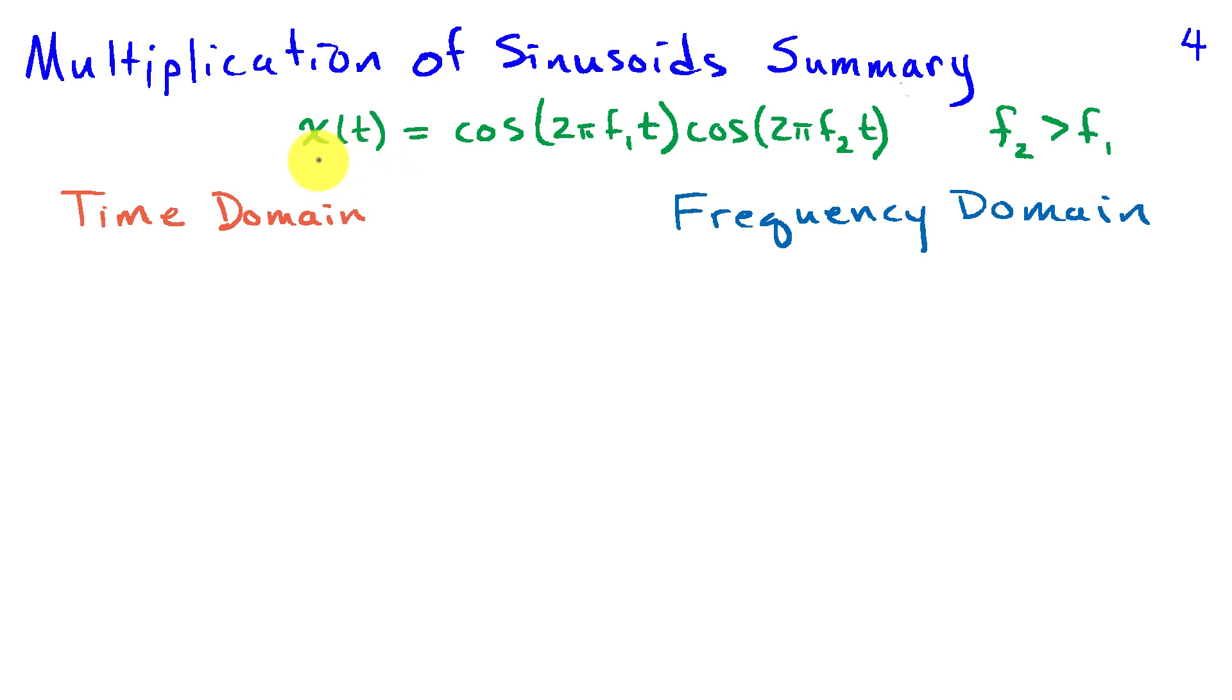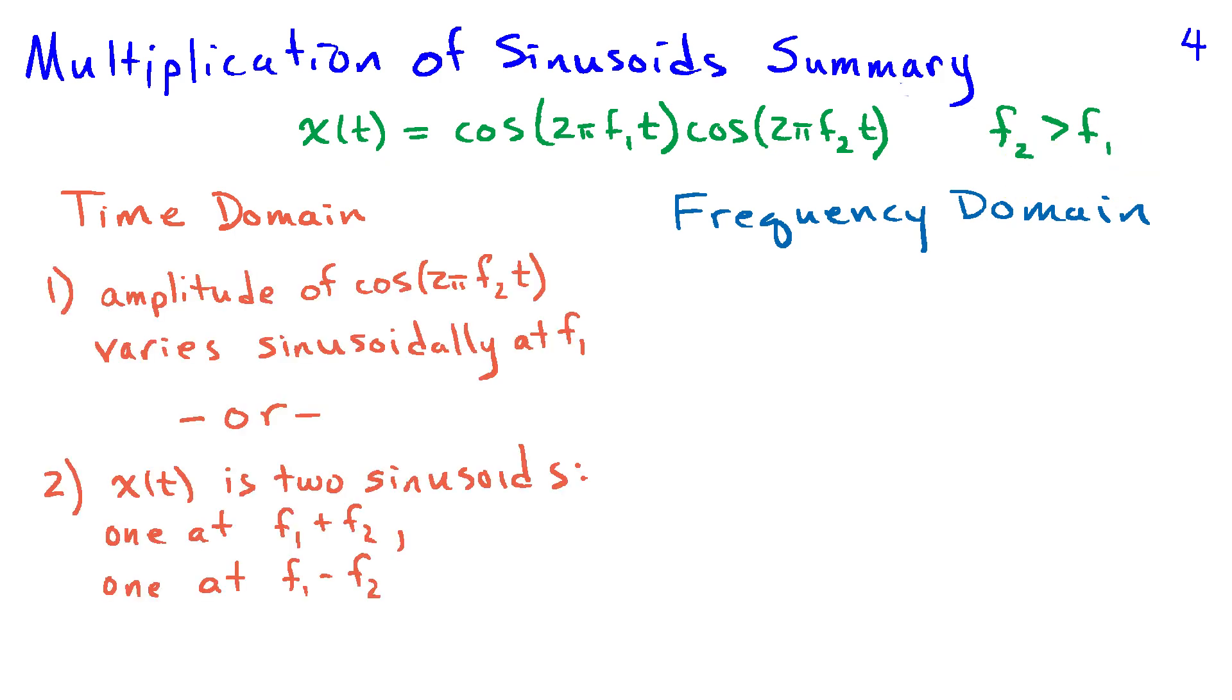Let's wrap this up. I'm going to assume in general that I have x of t be the product of two cosines, one at frequency f1, the other at frequency f2. And for convenience, I'm going to assume that f2 is bigger than f1. I can think about this two ways in the time domain. One is taking the sinusoid that has the higher frequency and letting its amplitude vary sinusoidally at the frequency corresponding to f1, the lower frequency sinusoid.